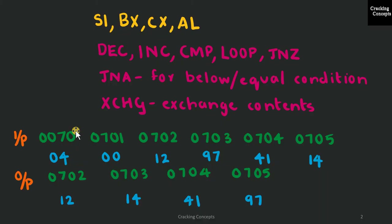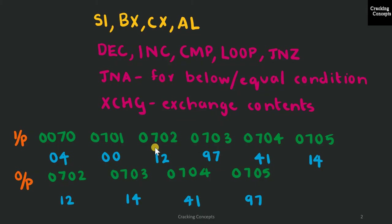Then we have XCHG (exchange), which will exchange the values at the locations specified after it. Now for the input: at location 0070 I'll store the count of numbers to be compared, which is 4. At the next location I give 00 as a partition between the count and the set of numbers. Then from 0702 I'll store the four numbers to be sorted: 12, 97, 41, and 14. The result will give the ascending order of these numbers at the same locations, from 0702 to 0705.